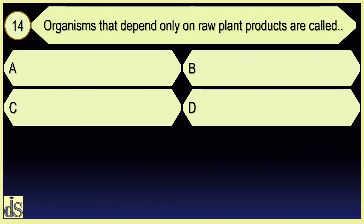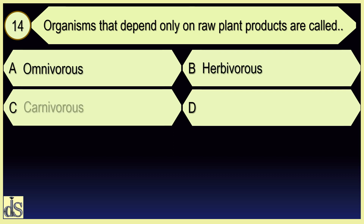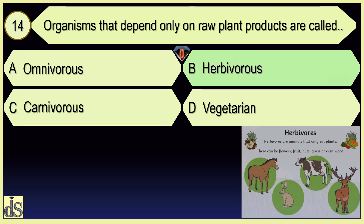Organisms that depend only on raw plant products are called herbivores.